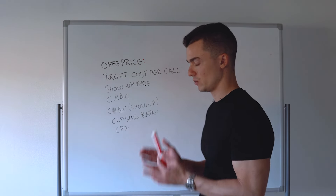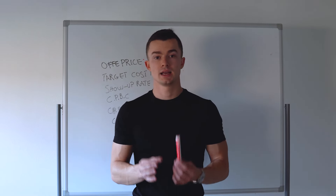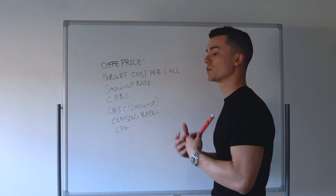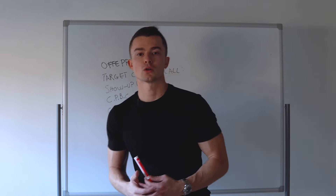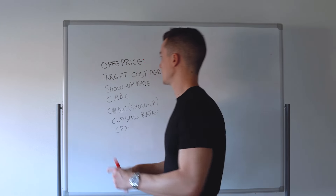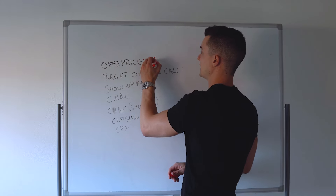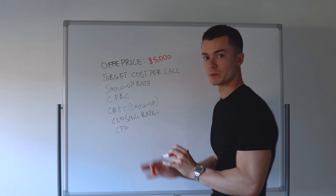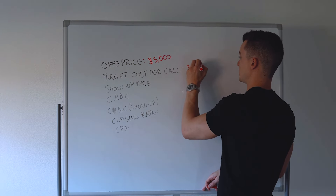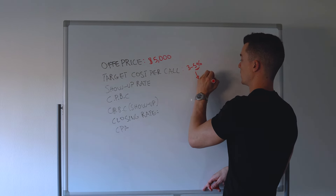The first thing you need clarity on if you have a high ticket offer is how much you're going to be paying for a call and what is a good cost per call. Since there are a lot of different metrics and different offer prices, the easiest thing to do is take the offer price. Let's assume your offer price is $5,000 — a good cost per call is anywhere between 3 to 5 percent of the offer price. So at 5%, you're paying roughly $250 for a call.